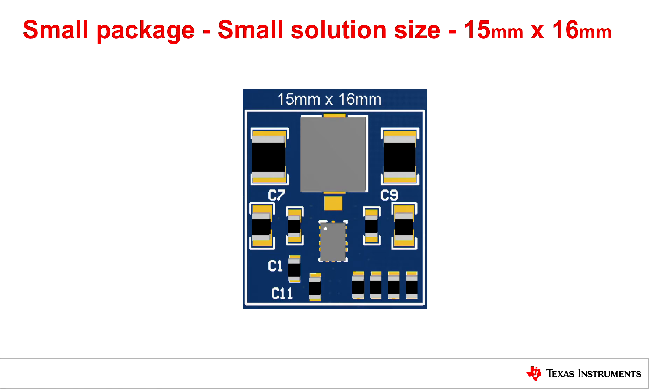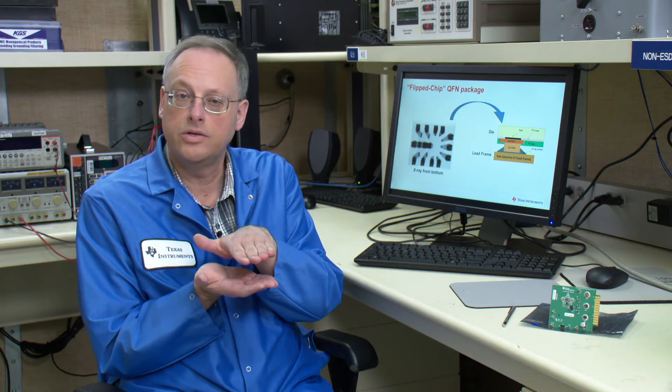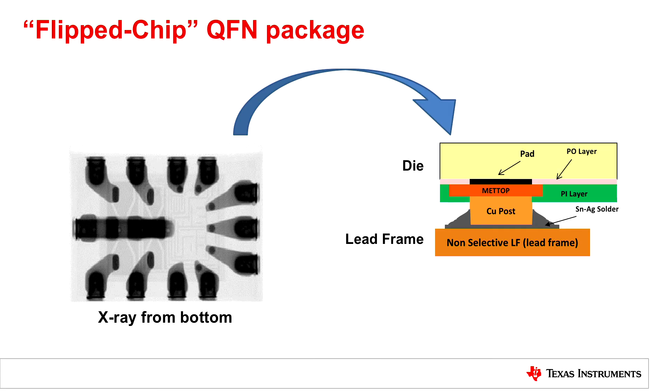The other advantage of this particular package is it's what we call a flip chip design. And essentially what we have here is the die is turned upside down and soldered directly onto the copper lead frame.